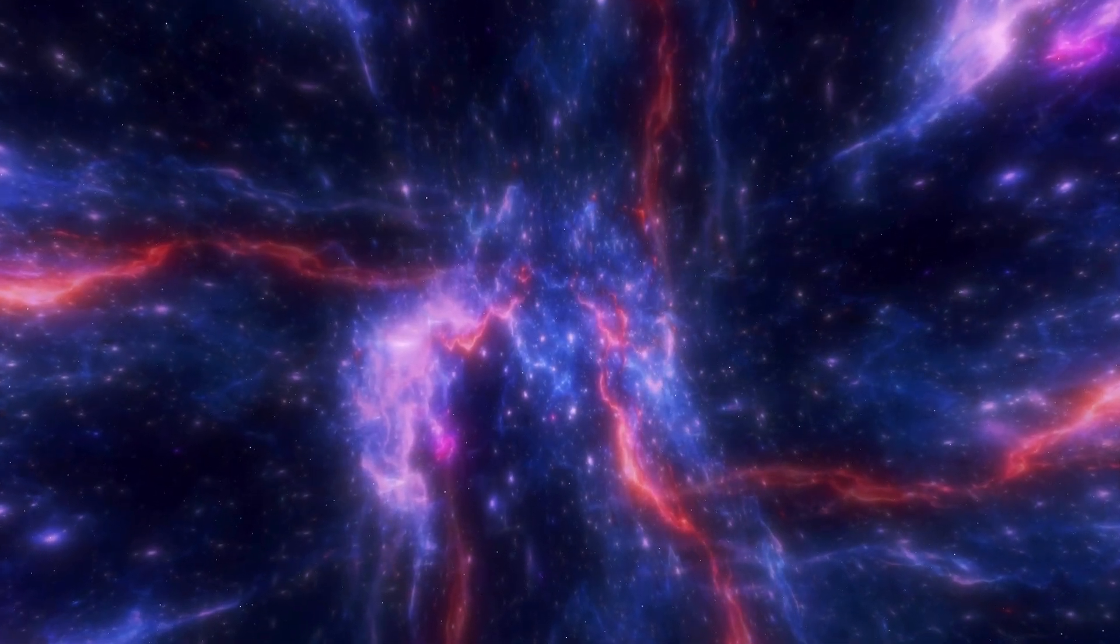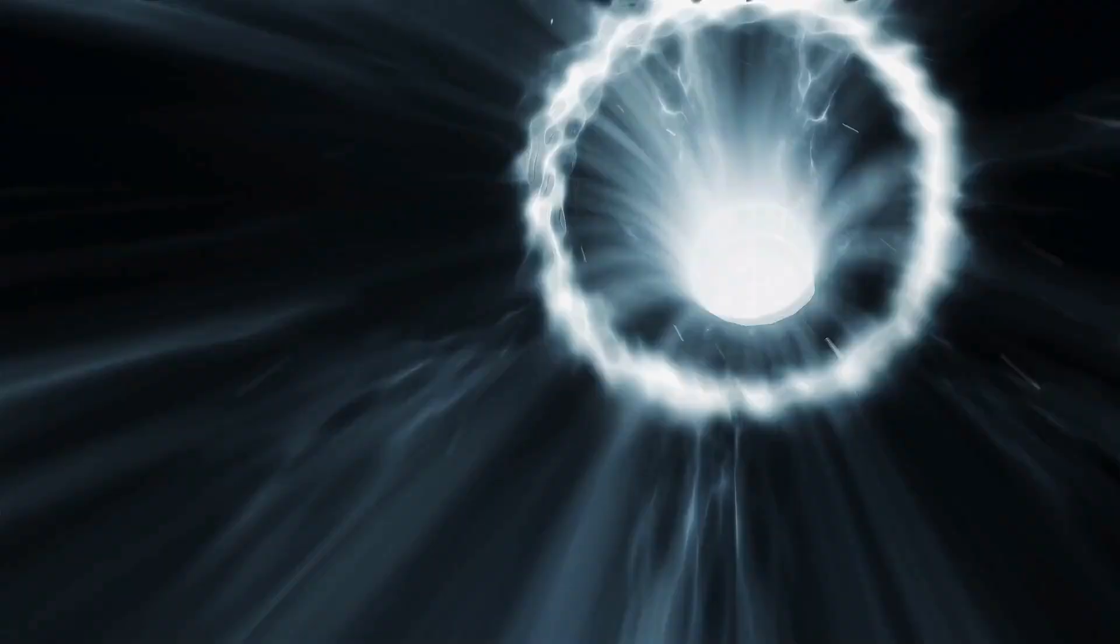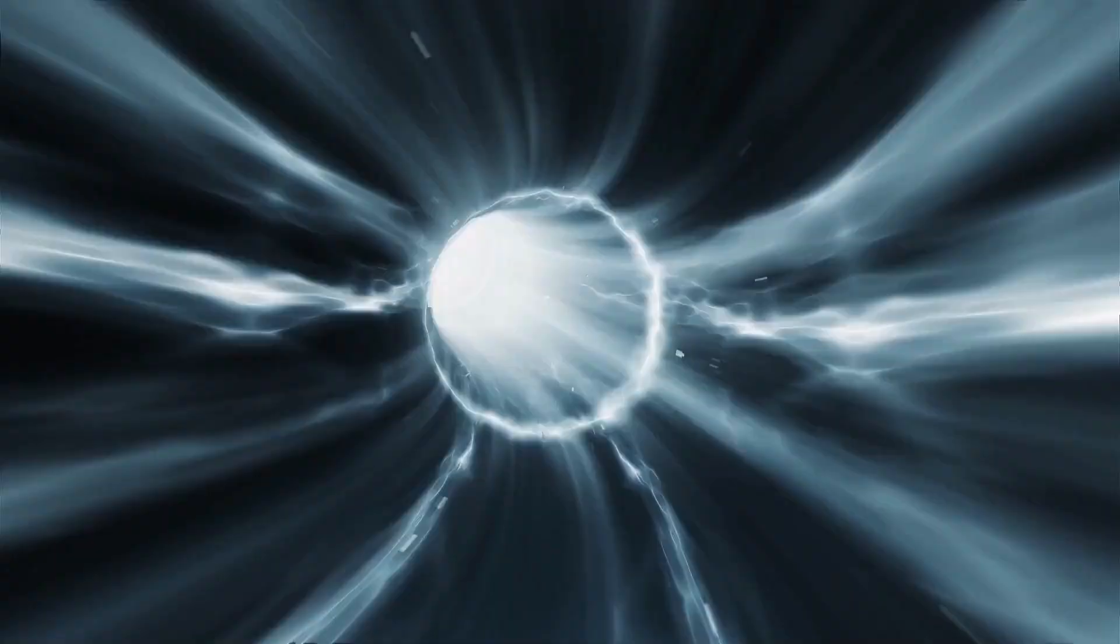Then comes the climax, when iron starts forming at the core. Unlike lighter elements, iron doesn't release energy when fused, so the energy produced isn't enough to resist the star's own crushing gravity. The star balloons in size and creates an implosion, followed by a massive rebound effect, resulting in the explosive force of a supernova.